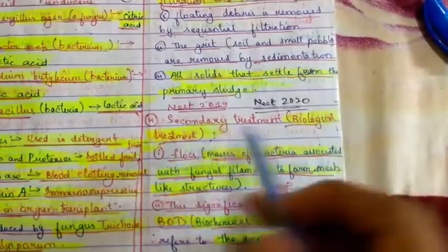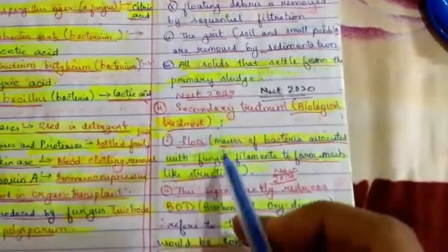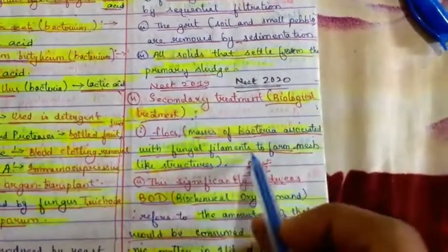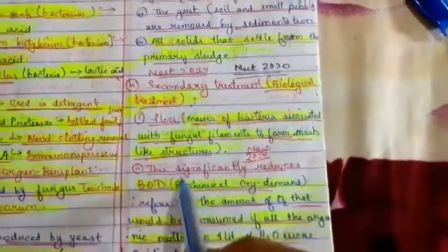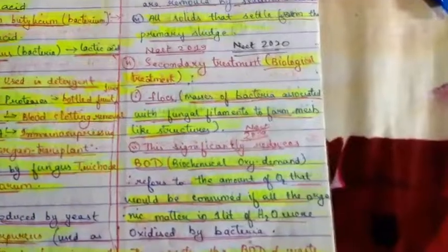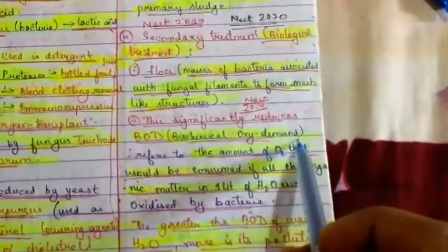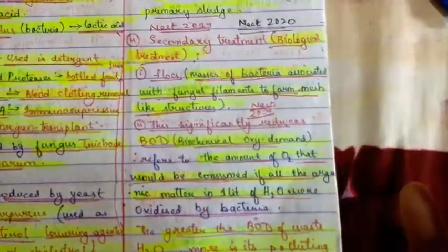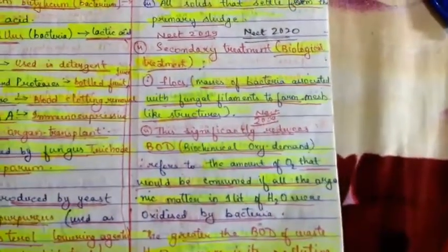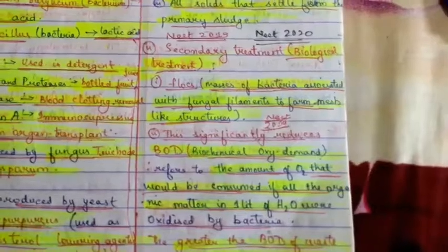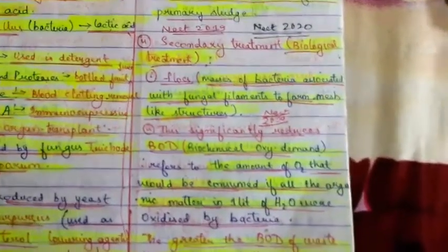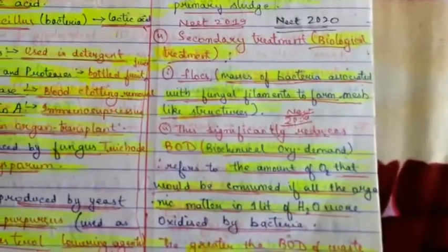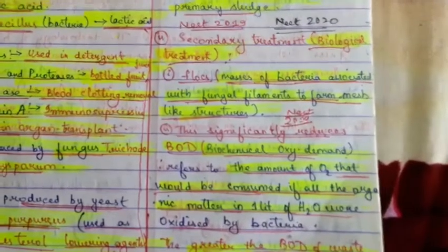Secondary treatment is biological treatment. Masses of bacteria associated with fungal filaments form a maze-like structure. This significantly reduces BOD, which refers to the Biochemical Oxygen Demand. In ecology questions, if the BOD increases, you need to know what will happen — this has been asked in NEET 2016 Phase 1 and Phase 2.